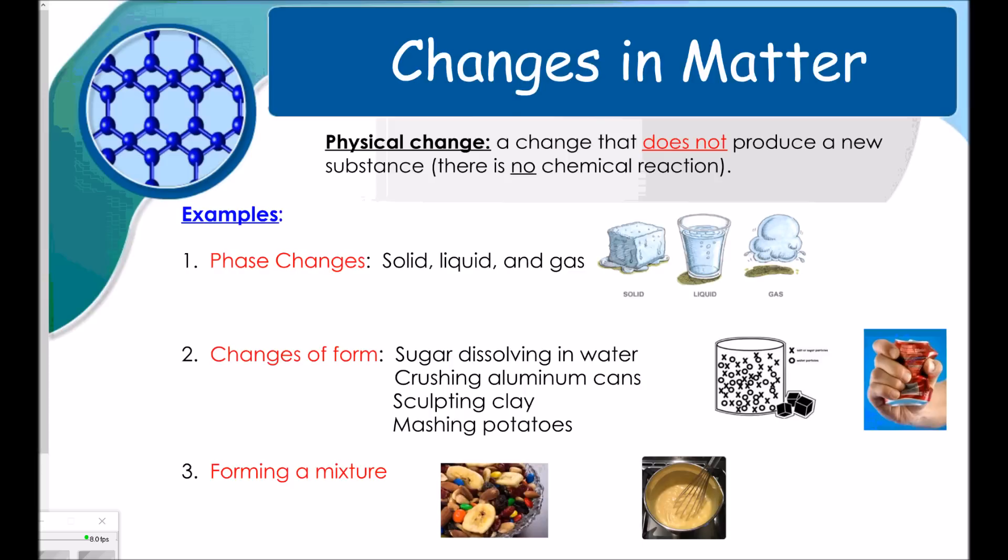A physical change is a change that does not produce a new substance, meaning there's no chemical reaction. Some examples of that are phase changes, like changing from solid to liquid to gas, changes of form like dissolving sugar in water, crushing an aluminum can, or forming a mixture like trail mix or cake batter.